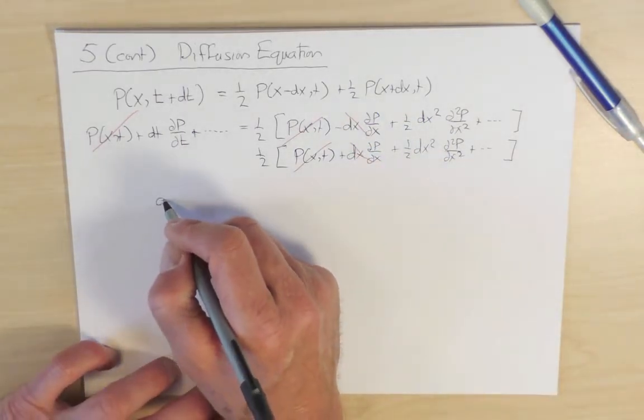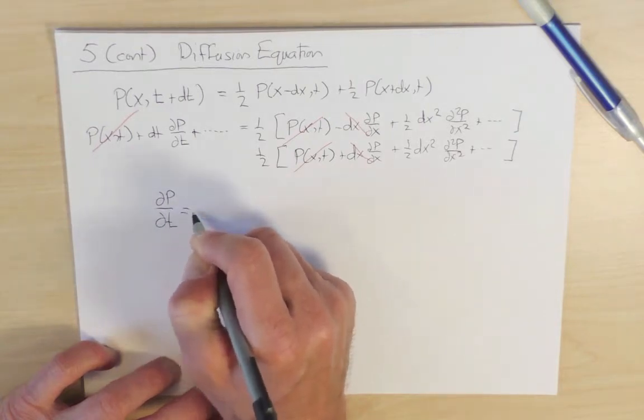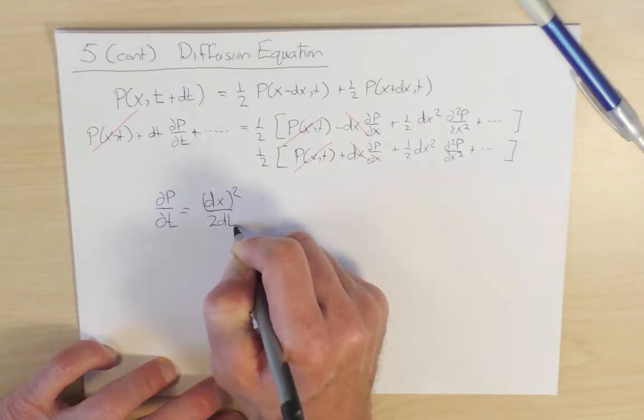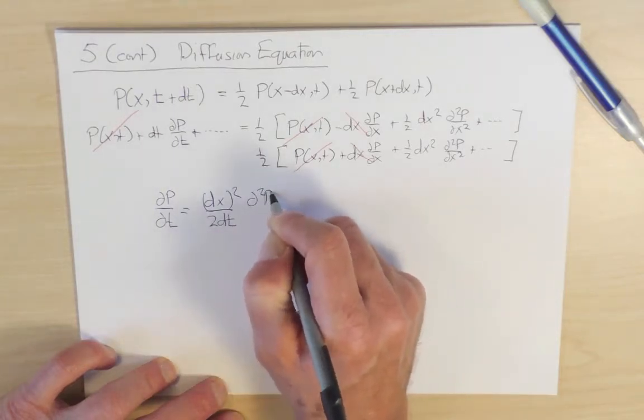dp/dt is equal to dx squared over 2dt, d²p/dx².